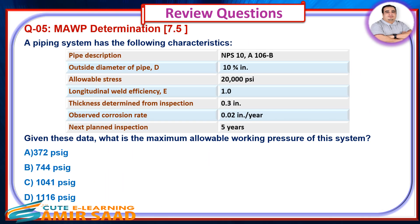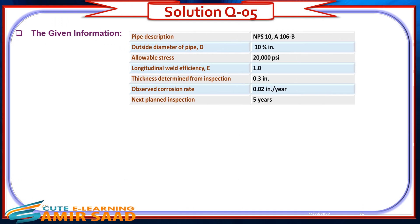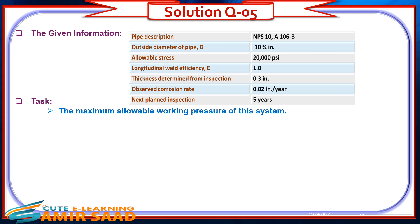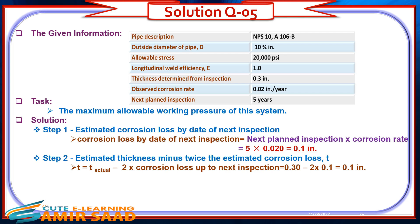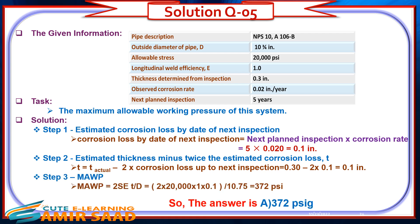Question 5: A piping system has the following characteristics as shown on the table below. Given these data, what is the maximum allowable working pressure of this system? Solution: Step 1 — Calculate the estimated corrosion loss by date of next inspection. Step 2 — Calculate the estimated thickness minus twice the estimated corrosion loss. Step 3 — Calculate MAWP. The answer is A: 372 PSI.